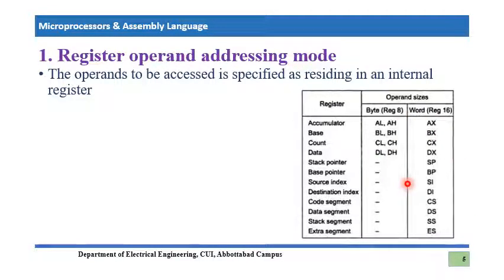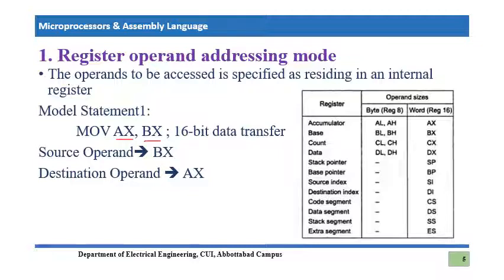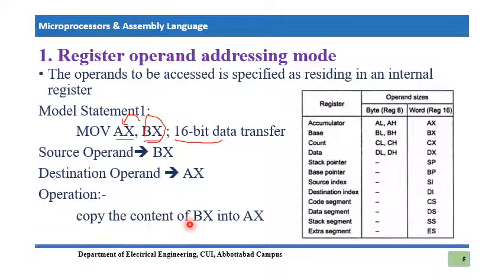In register operand addressing mode, these registers are used as operands. For example, the instruction MOV AX, BX: the source operand is BX and the destination operand is AX. Whatever 16-bit value is stored in BX will be copied into AX. This is a 16-bit data transfer operation. Since both operands are registers, this instruction is using register operand addressing mode.